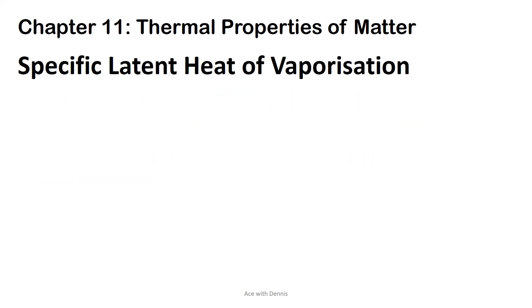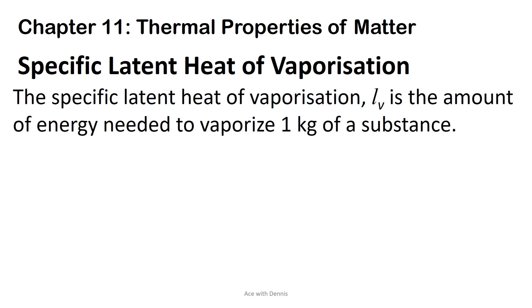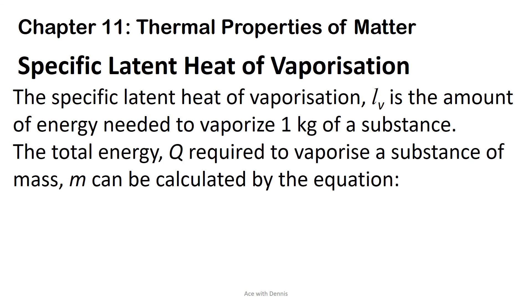Specific latent heat of vaporization. The specific latent heat of vaporization, LV, is the amount of energy needed to vaporize one kilogram of a substance. The total energy Q required to vaporize a substance of mass m can be calculated by the equation Q equals mLV.